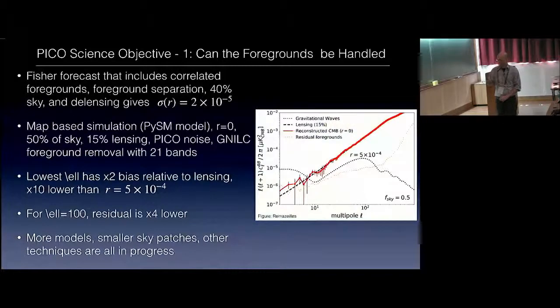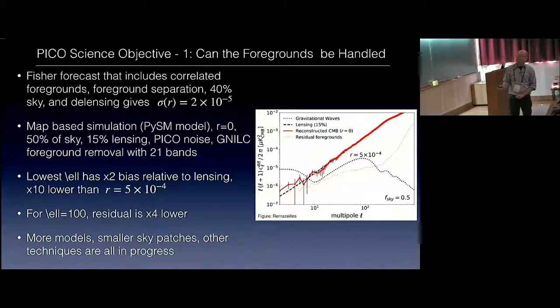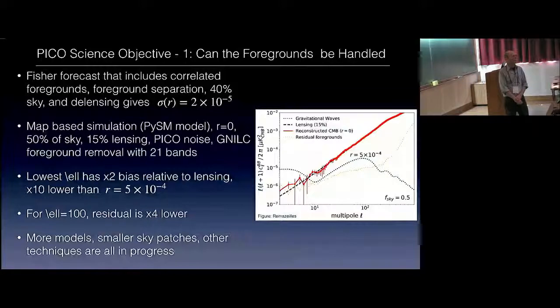When we do a Fisher forecast that includes correlated foregrounds, foreground separation, 40% of the sky and the lensing, with the Pico noise, it gives a sigma R of 2 times 10 to the minus 5. We do not quote 2 times 10 to the minus 5. We think the Fisher forecast is optimistic.